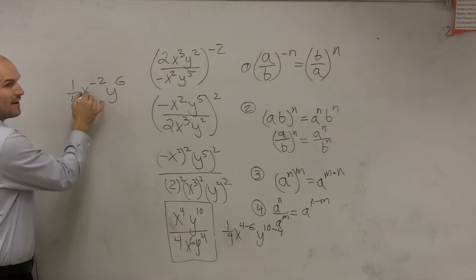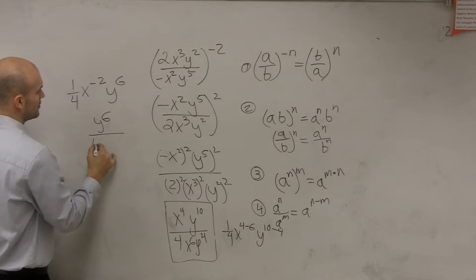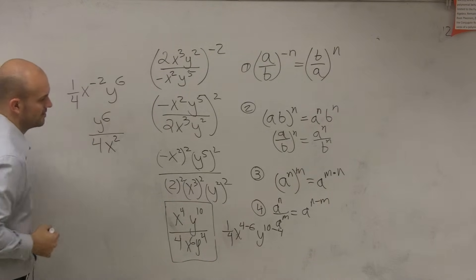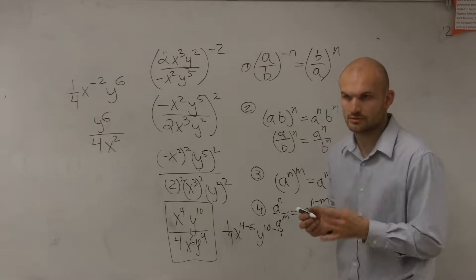So therefore, that becomes x to the negative second, y to the sixth times one fourth. So therefore, this now has to make sure it's on the denominator. So therefore, my final answer is going to be y to the sixth over 4x squared. Is that a more simplified answer? Is that what you ended up getting? Good.